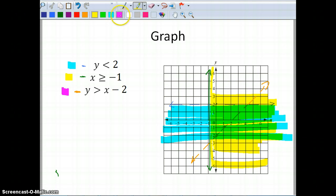Now let's do the pink. y is greater than x minus 2. So I'm going to this line and I'm going to shade above. Now when I shade above, the only area that's included in all three graphs is inside this triangle right here.